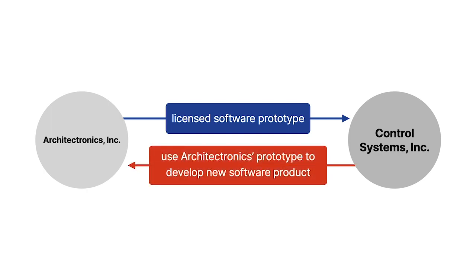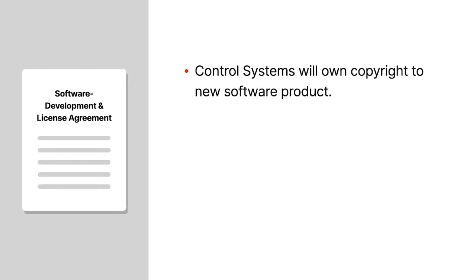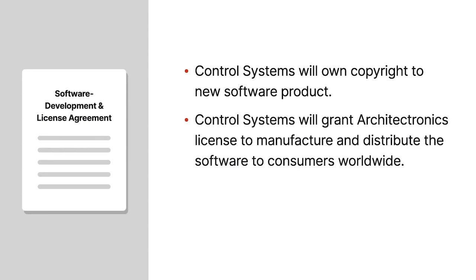Control Systems was to use Architectronics' prototype to develop a new software product that would improve pre-existing computer-aided design programs. The agreement also stipulated that Control Systems would own the copyright to the new software product and grant Architectronics a license to manufacture and distribute the software to consumers worldwide.